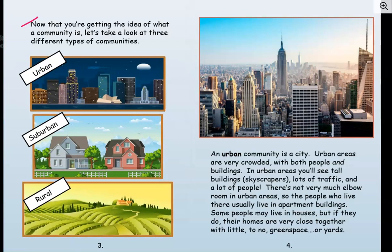Now that you're getting the idea of what a community is, let's take a look at three different types of communities. We have urban — it looks like a big city. We have suburban — it kind of looks like a neighborhood. And we have rural — I only see one house way out there in the distance, and a lot of it looks like a big, huge garden or farming area. So it kind of gives you a peek into what the different types of communities are.